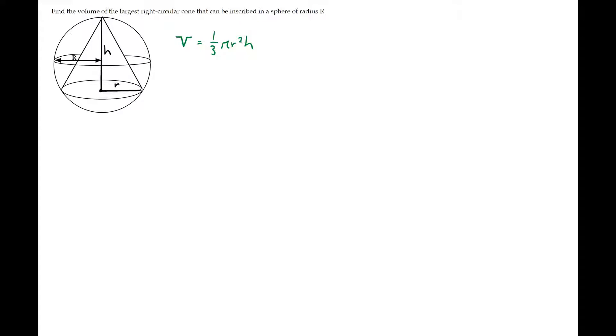Okay, so now I've got my volume. But then in optimization problems, I need that equation, my optimizing equation, to be in one variable, because I'm going to take the derivative and I only want one thing changing. I don't want two different variables changing. I don't want to deal with multiple variables here. So I need to look at my primary equation here and think, how can I substitute for an equation here to try and get it in one variable?